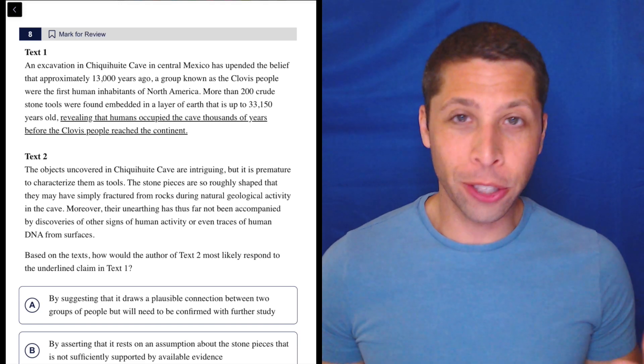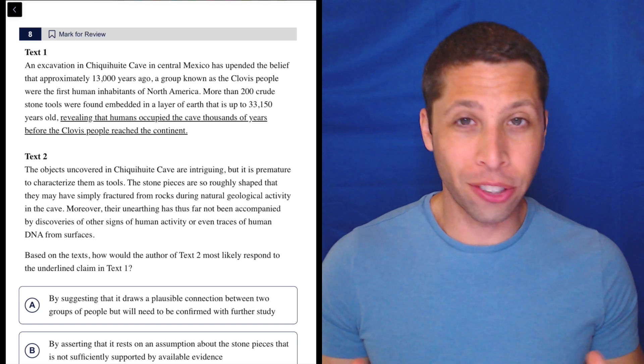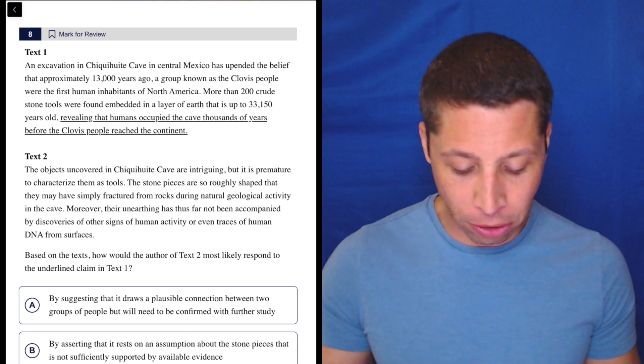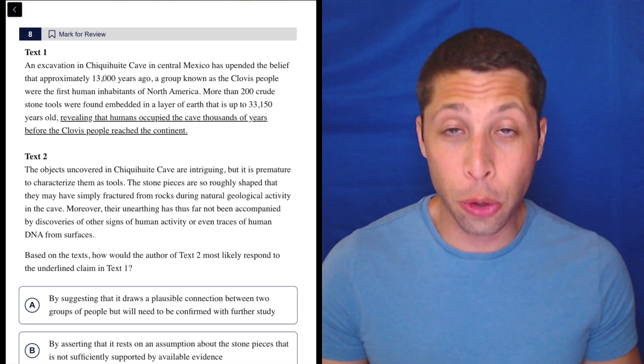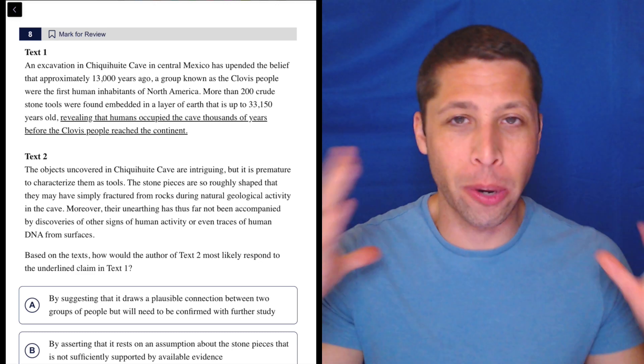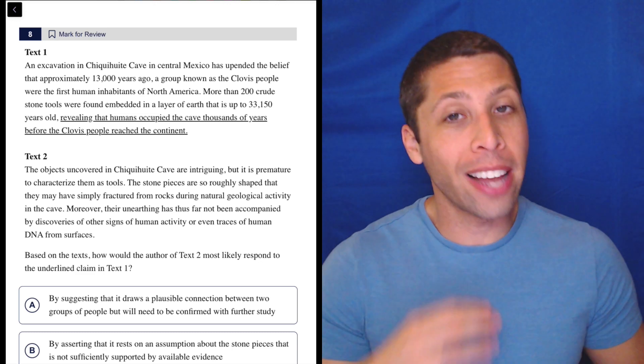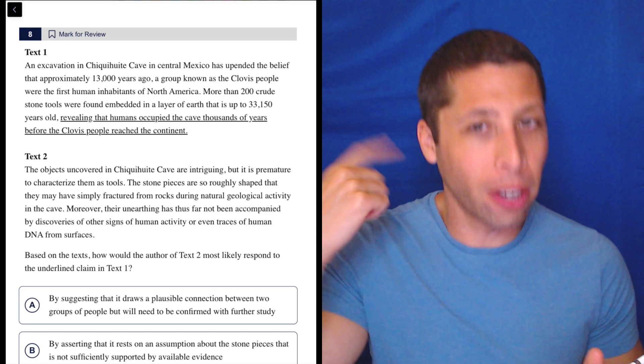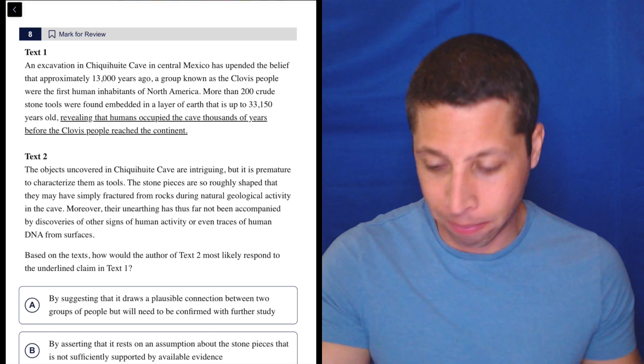I really don't know why, I don't know if it's a good strategy for everyone, but for these questions I really like doing them in reverse, especially when the question is like how would text two respond to something in text one? I like reading text two first. I want to get what they think and dumb summarize that. That way when I'm reading text one, I'm like, all right, but how does that relate back to what they're saying? So let's take a look.